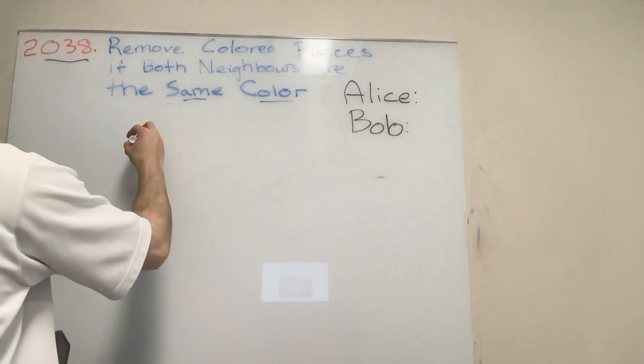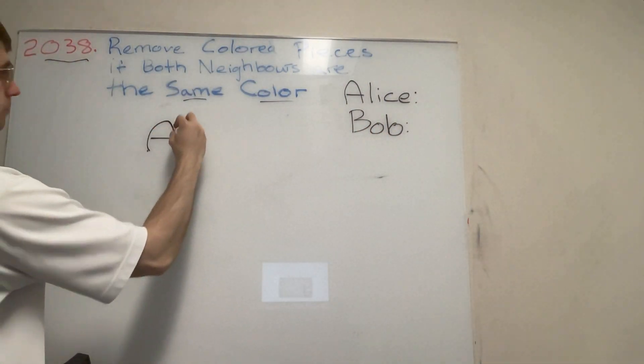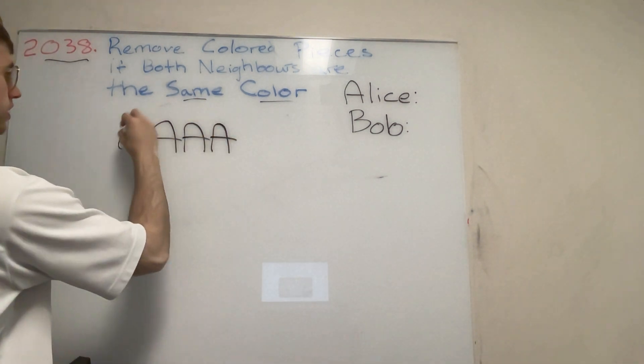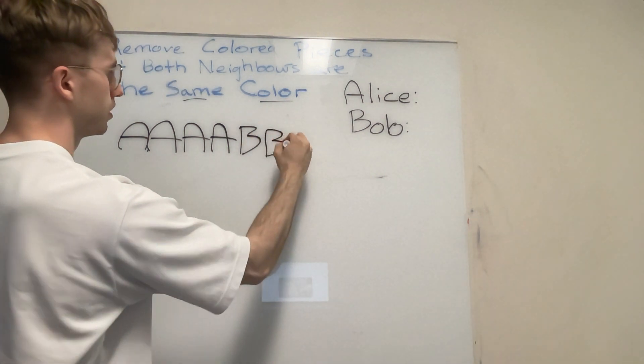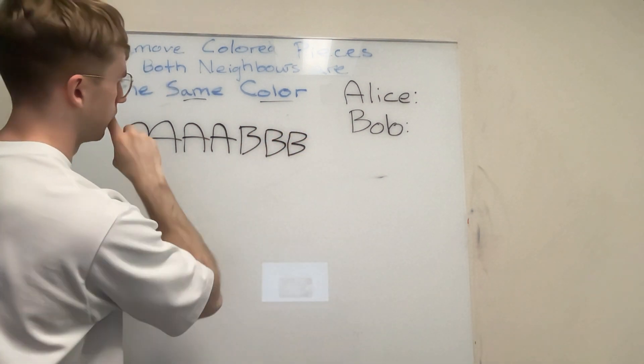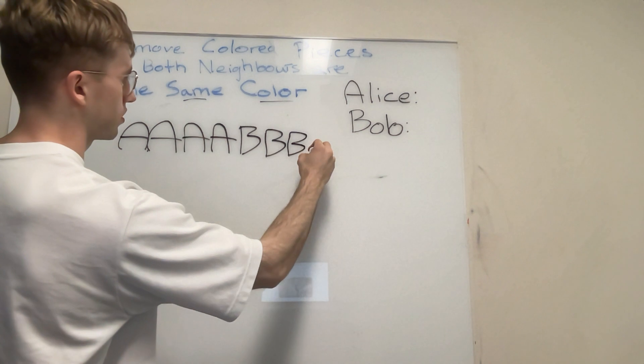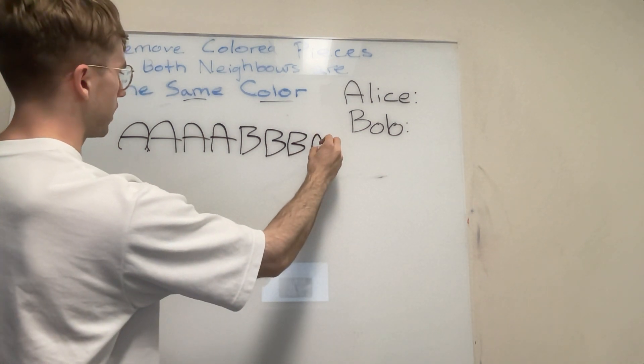The reason why this works is, I'll give you maybe a better example. Let's say that we have something more like this: we have AAAA, add another A at the beginning here, and maybe we say BBB.